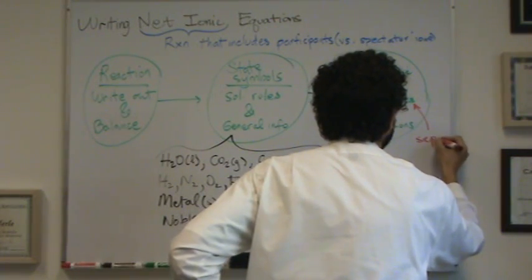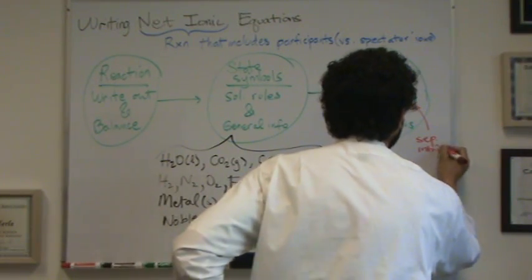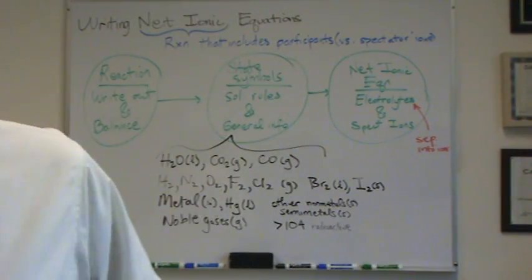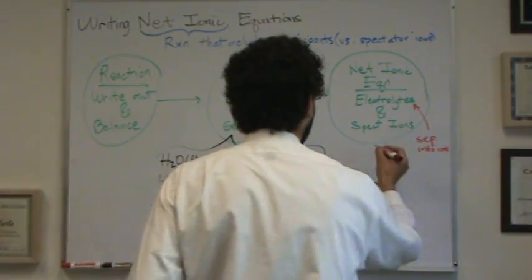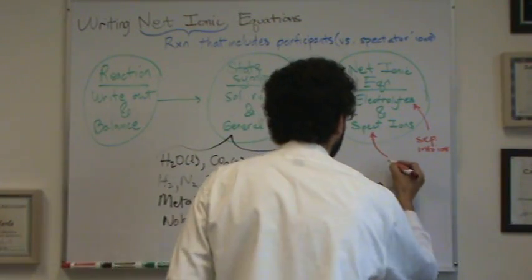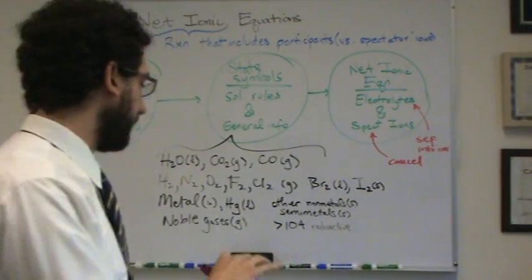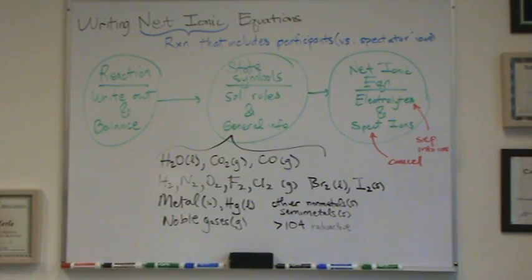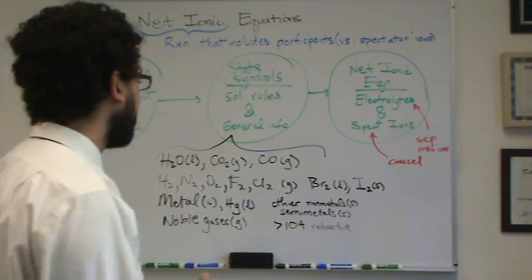So, separate into ions. Why do you separate them into ions? Because they're strong electrolytes and that's what they do naturally. After you separate them out into ions, you're going to identify your spectator ions. Those are the ones that will cancel. Meaning, you'll see a sodium plus on one side, a sodium plus on the other side. You cancel those out. And those are your spectator ions. Whatever's left over is called your net ionic equation.